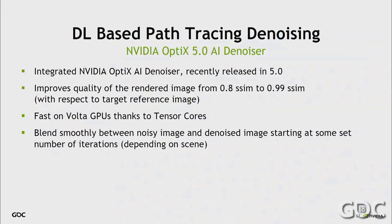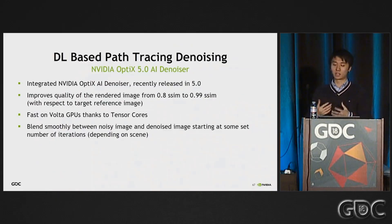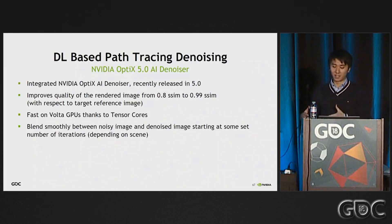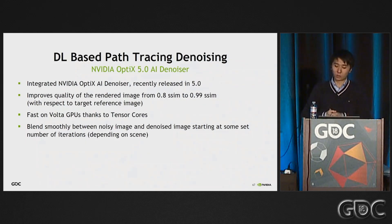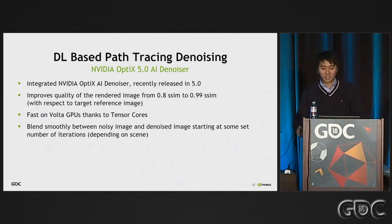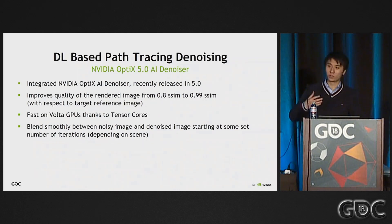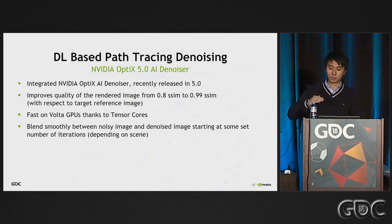We all know that path tracing converges very slowly, and even for non-real-time uses, we still like to wait less. So that's why we also hooked up our UE4 path tracer with the deep learning-based denoiser we're currently shipping in OptiX 5 to accelerate convergence. The denoiser uses a deep learning neural network to process the image. Unlike the real-time one, it takes input with more than one sample per pixel, but can produce results really close to ground truth — improving the image from 0.A SSIM to 0.99 SSIM compared to the reference. It leverages the Tensor Cores in Volta GPUs. In our UE4 integration, we can actually preview the results in real-time very quickly. In the demo shown earlier, we blend smoothly between the noisy image and the denoised image, so it feels like convergence is really fast.